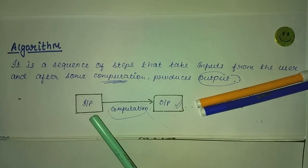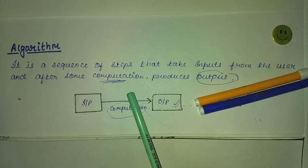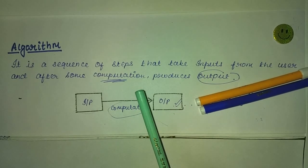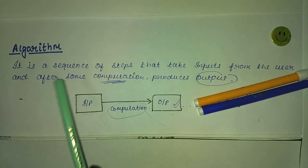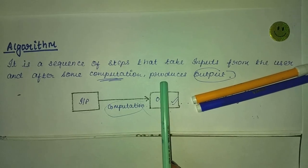Here we will see the definition of algorithm. As written over here, algorithm is a sequence of steps that take the input from the users and after some computations produces an output.